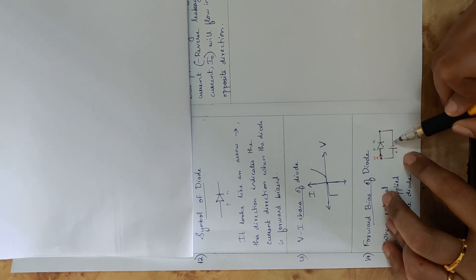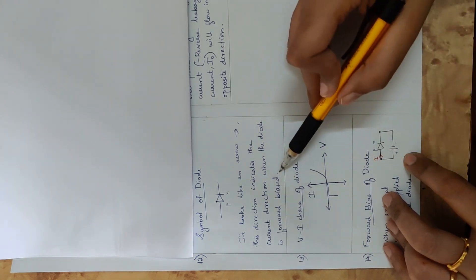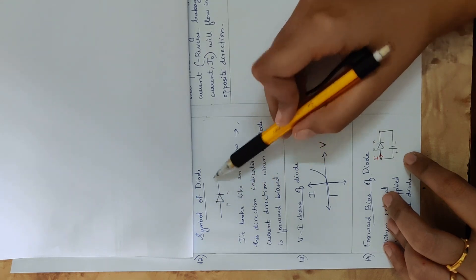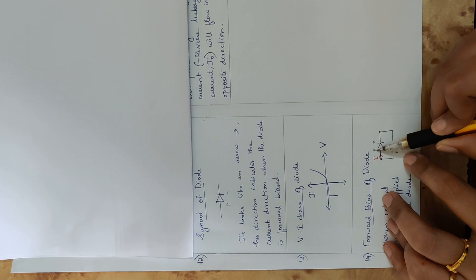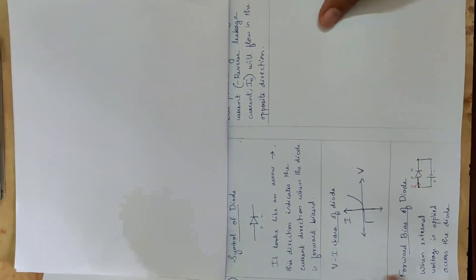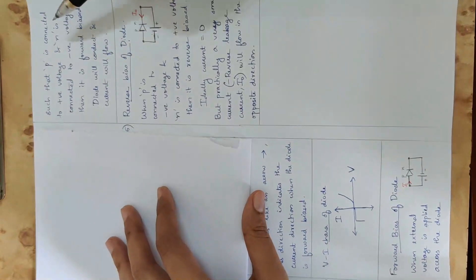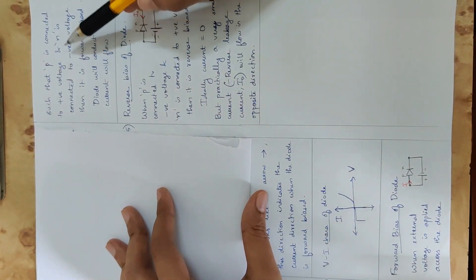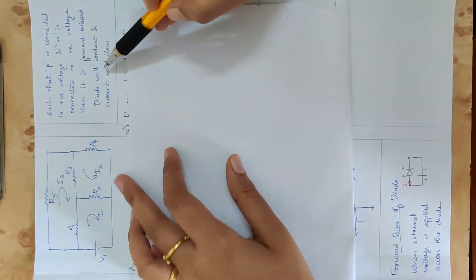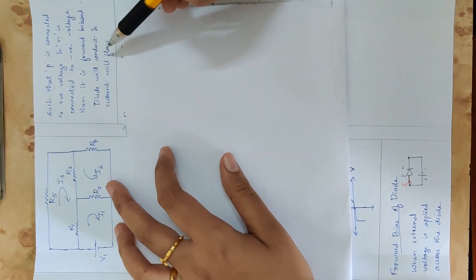This is forward biased. Current flows in the direction from left to right. When external voltage is applied such that P is connected to positive voltage and N is connected to negative voltage, it is forward biased and the diode will conduct — current will flow.